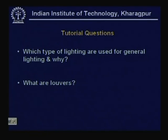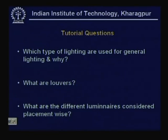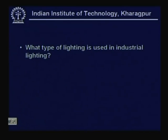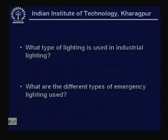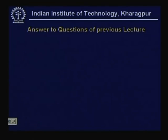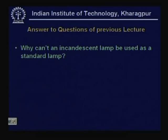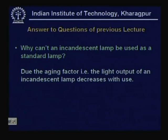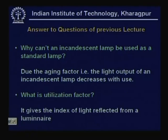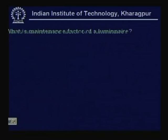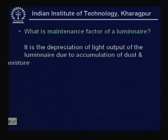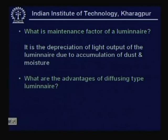The questions to be addressed include: which type of lighting is used for general lighting and why, what are louvers, what are different luminaires considered placement-wise, what type of lighting is used in industrial lighting systems, and what are the different types of emergency lighting used. Answers to previous lecture questions: an incandescent lamp cannot be used as a standard lamp because its light output decreases with use due to ageing. The utilization factor gives the index of light reflected from a luminaire. The maintenance factor of a luminaire is the depreciation of light output due to accumulation of dust, moisture, and age. Diffusing luminaires avoid glare.